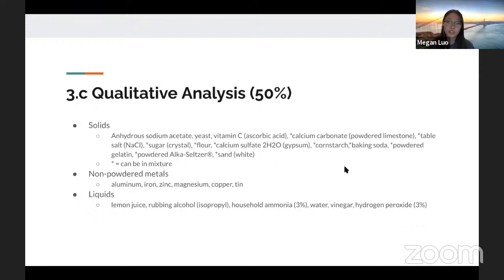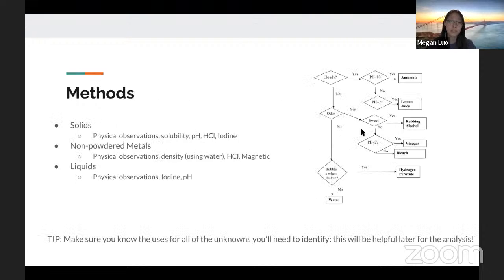So, within the evidence, the first big chunk would be the qualitative analysis. This takes up around 50% of the points in the event. It's also split into three sections: solids, non-powdered metals, liquids. Basically, they will give you an unidentified substance in one of these categories, and they will be one of the following as listed on the slide. And you'll have to identify which one it is based on the supplies you bring and the supplies given.